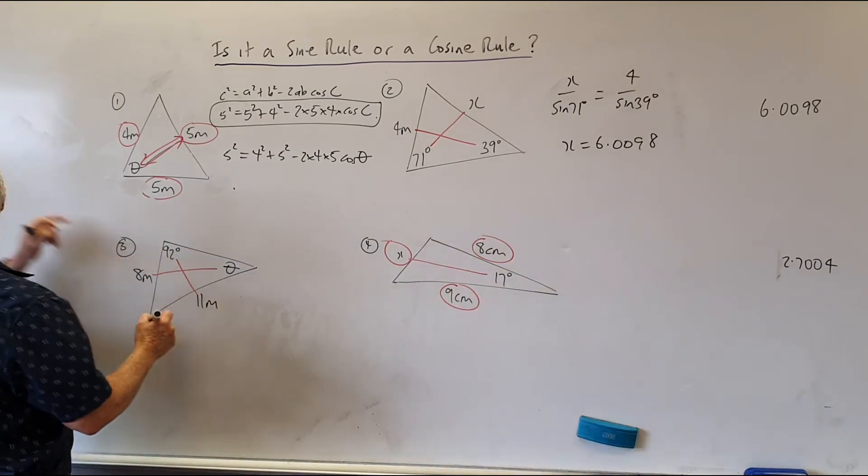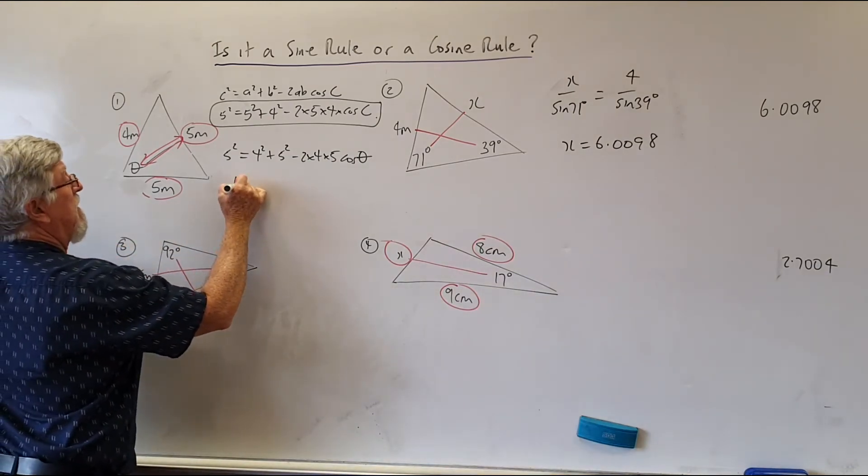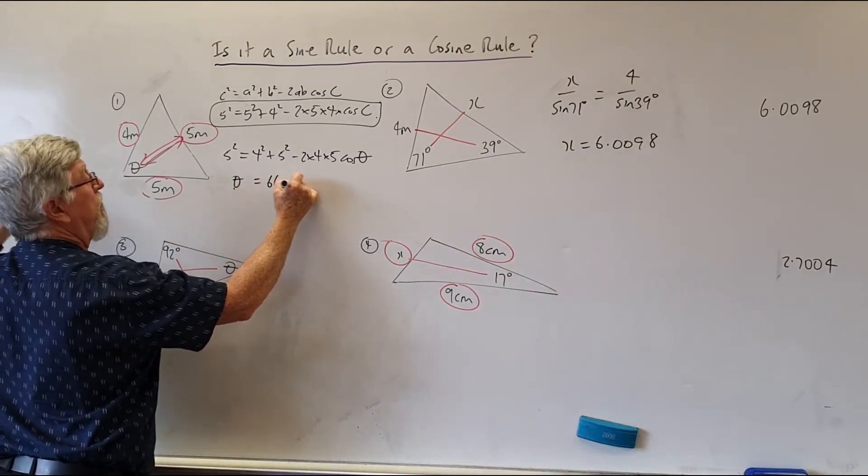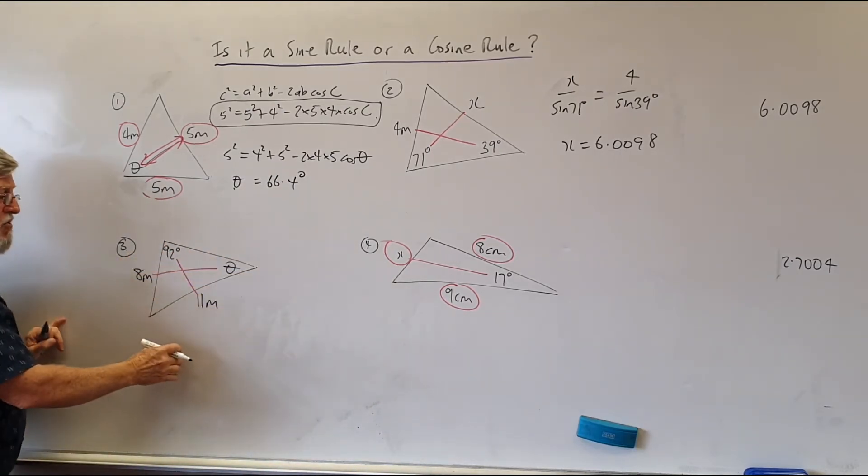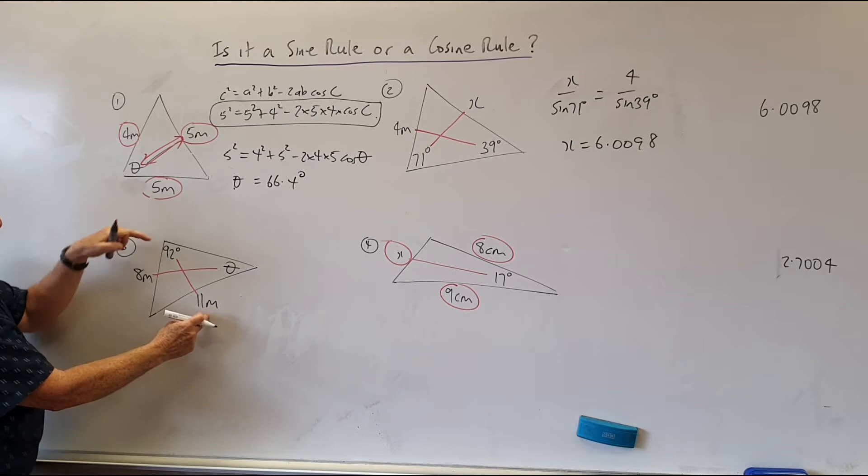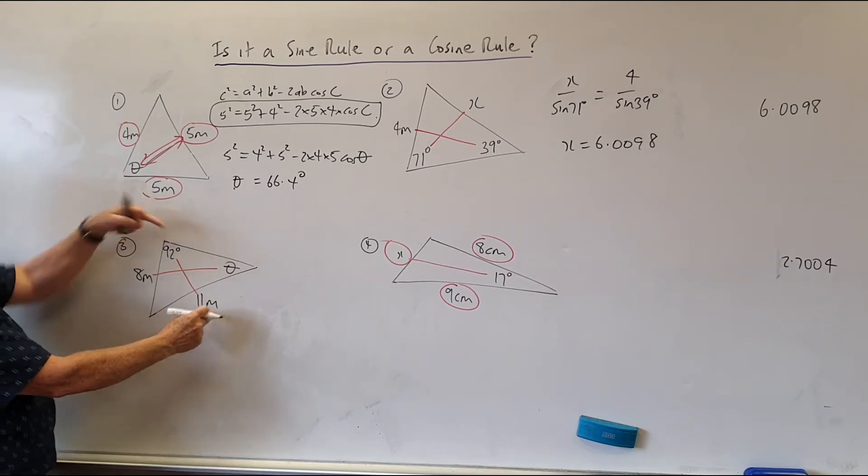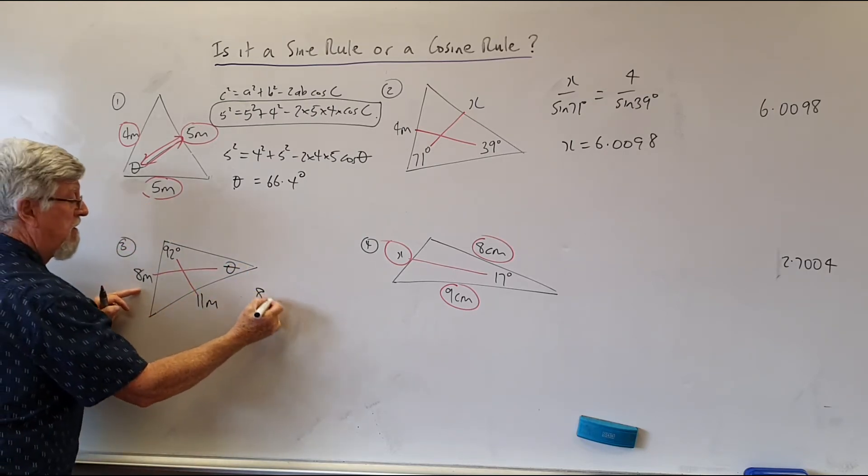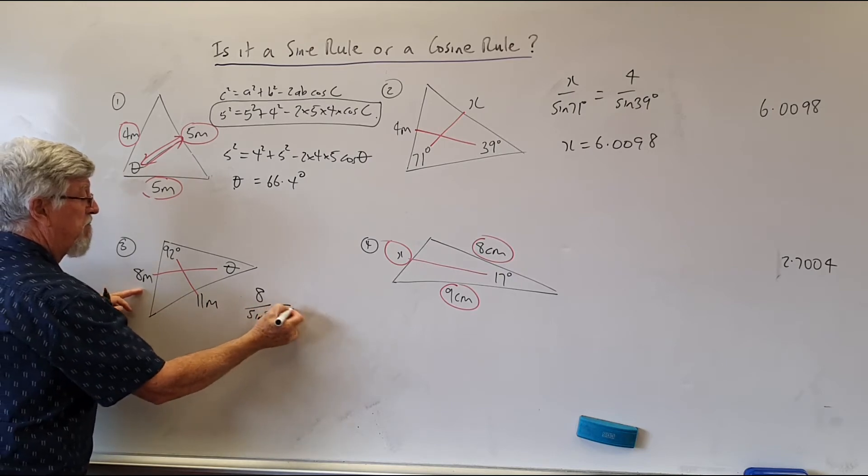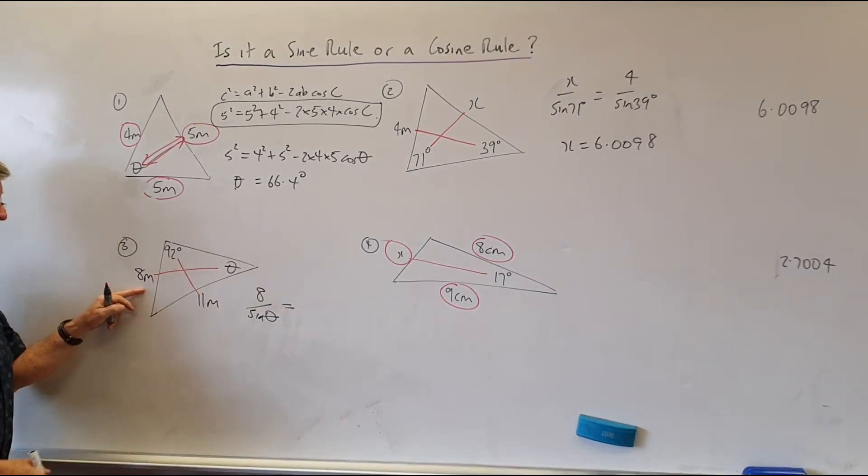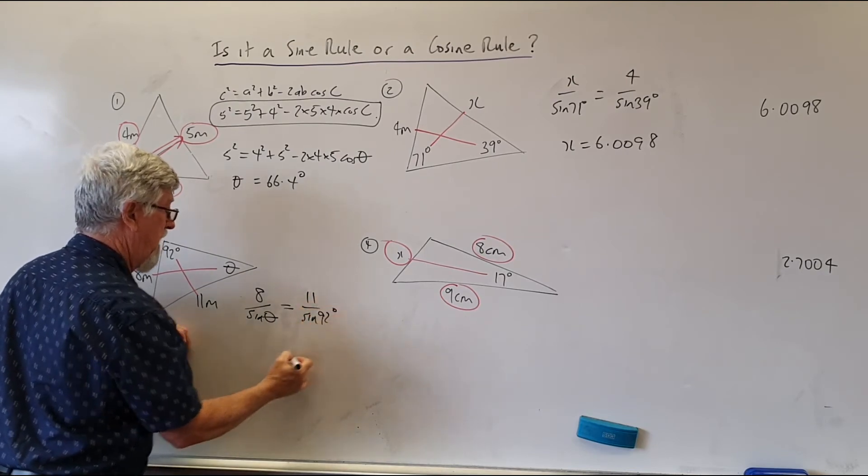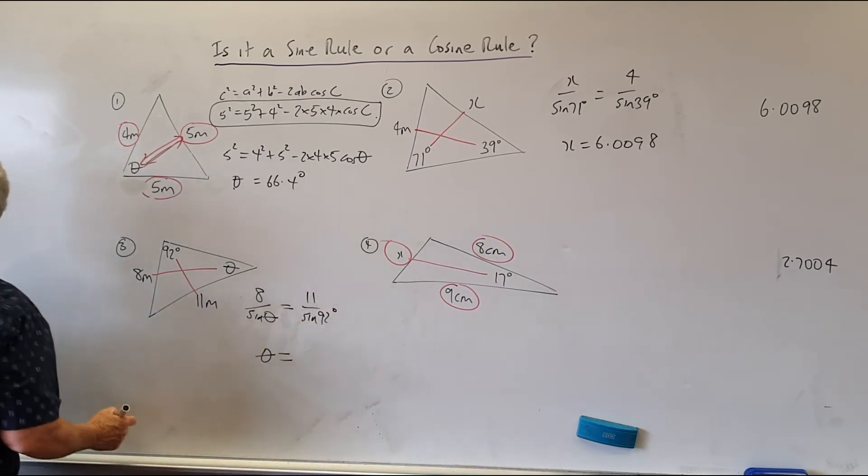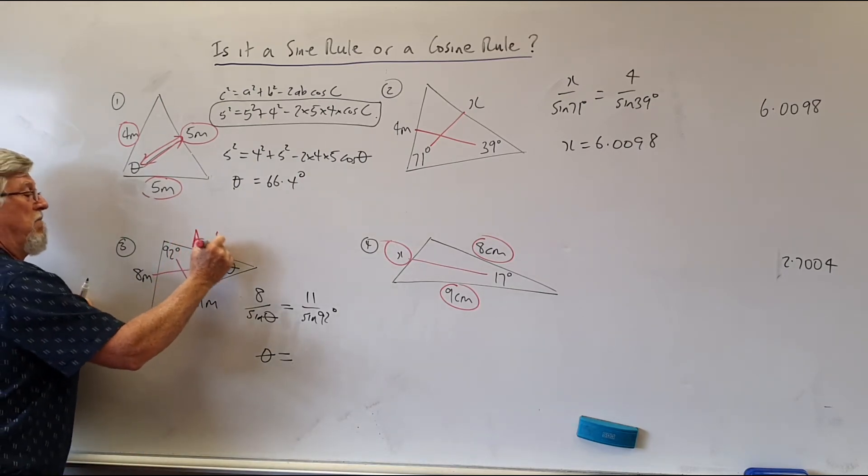This one over here, theta as I've written down here, that theta is 66.4 degrees. So I go to this one here and I don't do it with letters, just as pairs. This pair, there's no unknown there, so I don't pick that first. I pick this first. So I'm going to go eight on sine theta. Some people prefer to put sine theta on eight. It's your choice. And this one is 11 on sine 92. Put in your calculator and you get an answer of two answers. So this is the one I nag about. This is the ambiguous case.